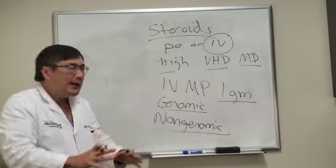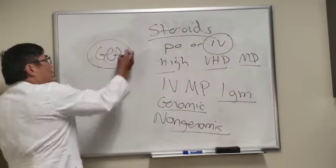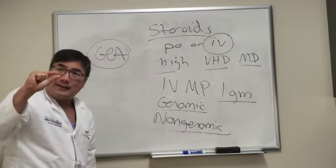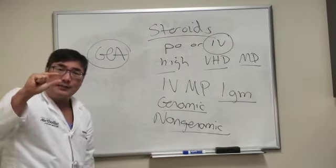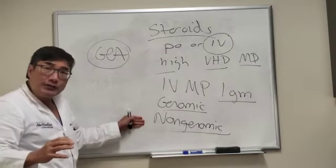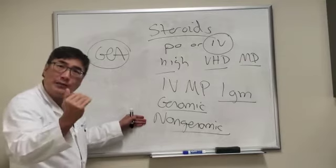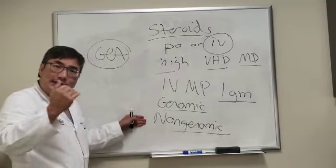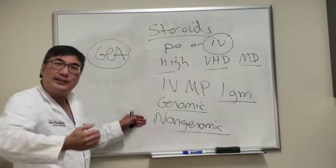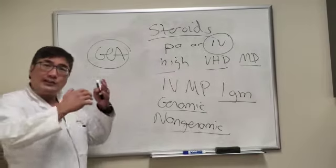For a disease like giant cell arteritis, where we're having luminal narrowing, that kind of effect can be reversed or stopped with high-dose intravenous steroids, presumably at the non-genomic level. The same thing is occurring when we have edema, leakage, and endothelial damage.